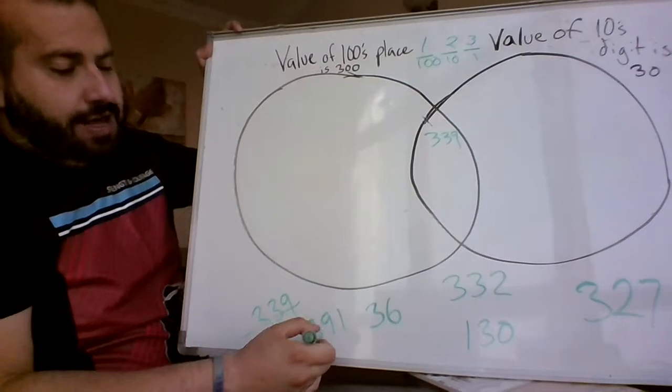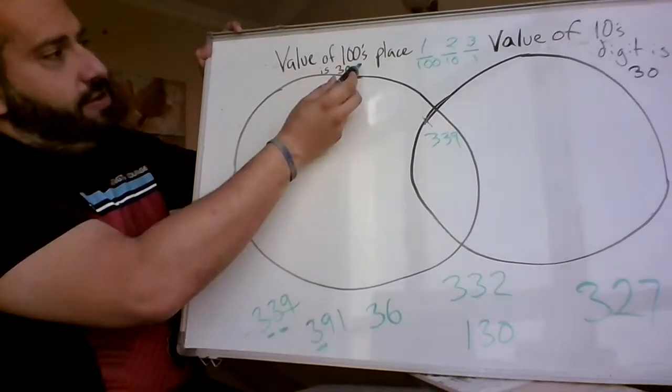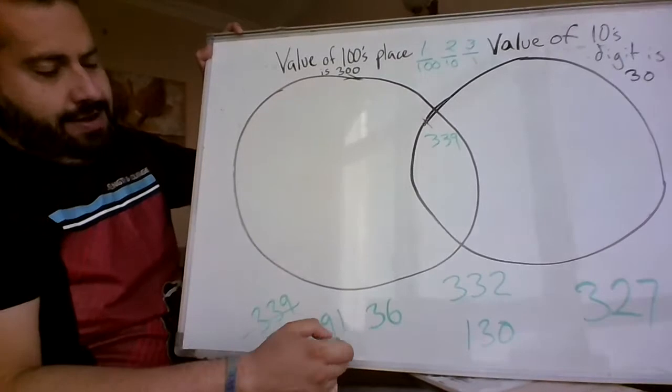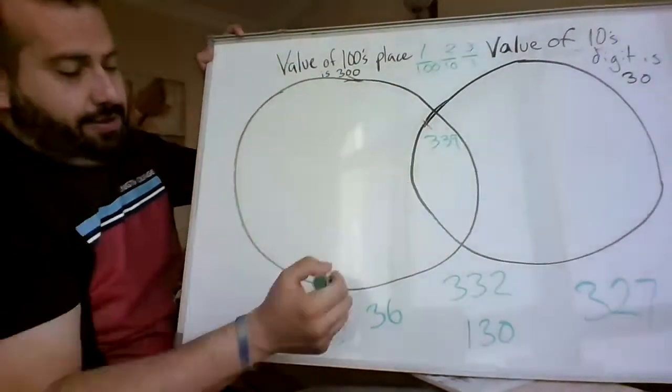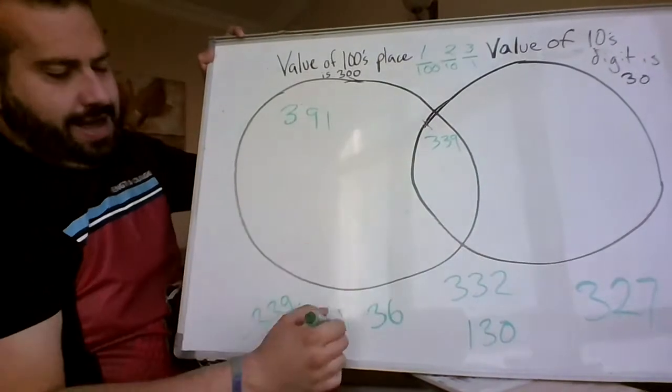Now we go to the number 391. In the 100s place, we got a 3. In the 10s place, well, it's a 9. So it doesn't go in the middle. We know it just goes up here, 391.